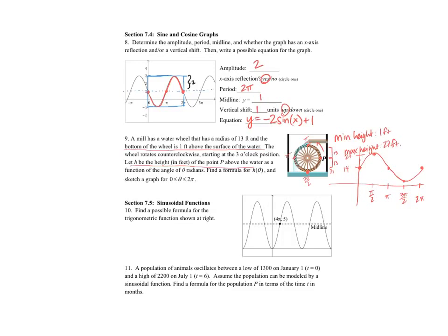So we'll have H of theta is equal to, so what is my amplitude? My amplitude is from the midline, it goes up 13 and down 13. So my amplitude is 13, sine of, and then again my period didn't change. So sine of theta. And then I want to do plus, and it looks like it's been shifted up 14 units.